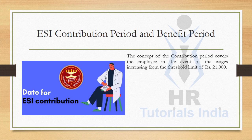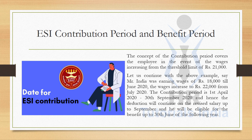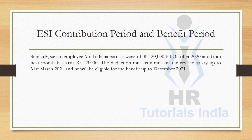Let us see an example about the contribution period. Mr. India was earning wages of 18,000 till June 2020, and the wages increased to 22,000 from July 2020. The contribution period is from 1st April to 30th September, and since his salary was increased in July, the payment of contribution will continue until September ending. The eligibility or benefit period for Mr. India will be up to 30th June 2021. Similarly, Mr. Indiana earns a wage of 20,000 till October 2020 and earns 23,000 from the next month. The deduction must continue on the revised salary up to 31st March, and he will be eligible for benefits up to December 2021.